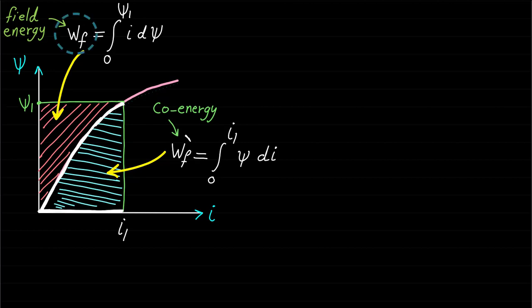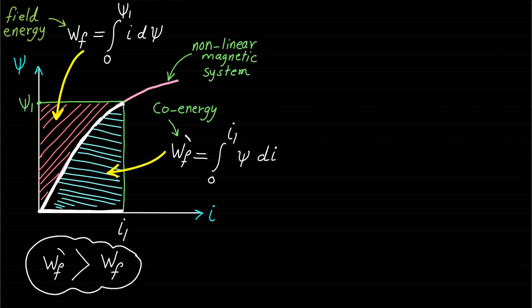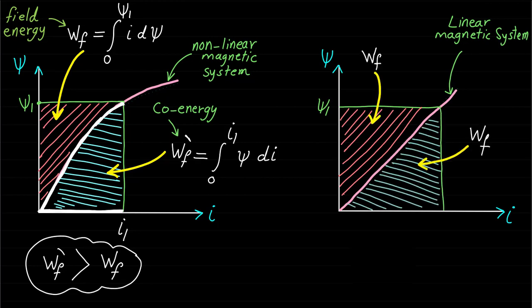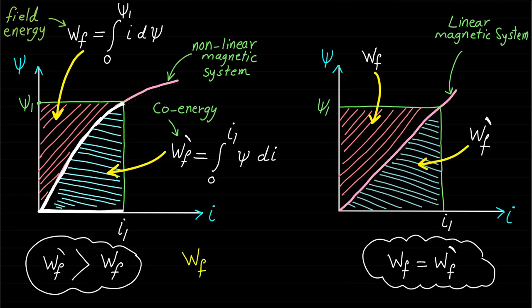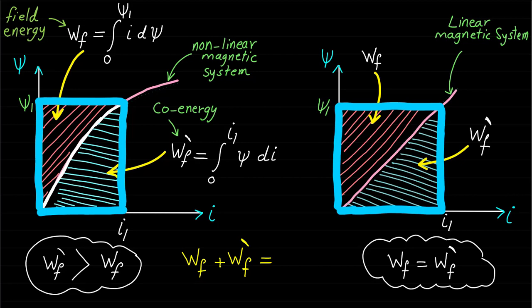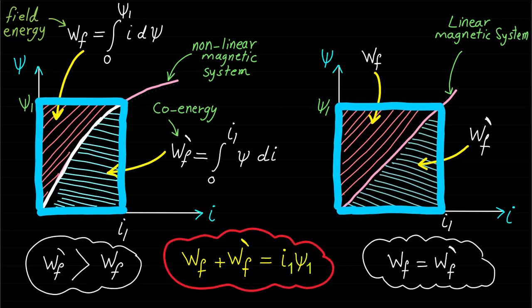In general, if the field energy WF or the co-energy WF' is known, then we should be able to derive expressions for the mechanical force or mechanical torque as we will see in the next lecture. In the case of a non-linear magnetic system, the co-energy WF' is greater than the field energy WF. However, in the case of linear magnetic systems, the field energy WF is equal to the co-energy WF'. In general, if we add the field energy WF and the co-energy WF', the result will be equal to the full rectangular area I₁·ψ₁.